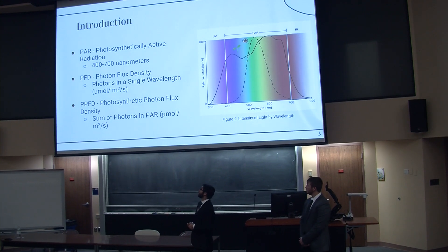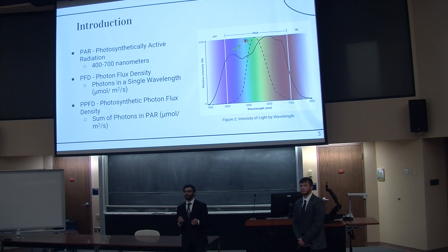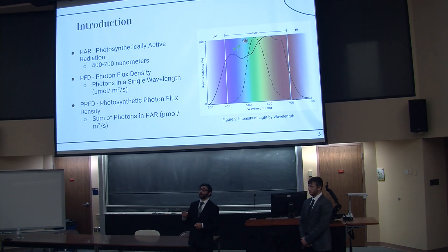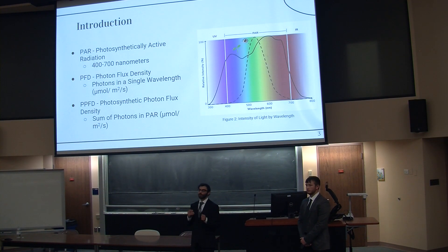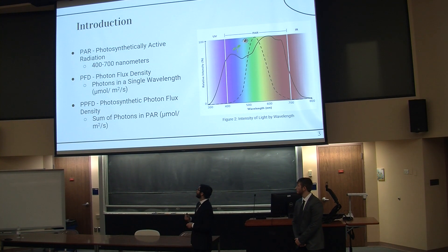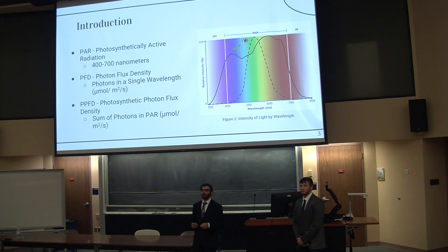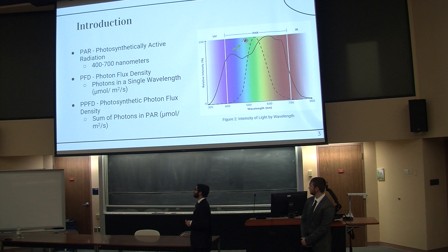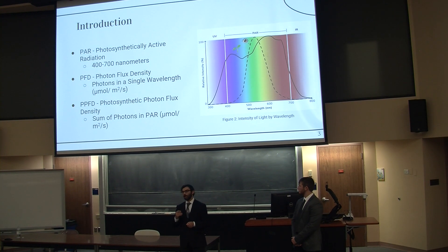Another term is PFD, photon flux density — how many photons of a single wavelength there are. Think of it almost as rain: count how many raindrops hit the ground every second; we're doing the same thing only for light photons. The last is PPFD, photosynthetic photon flux density — this is just the sum of photons within the PAR range. Both of these use the unit micromoles per meter squared per second.